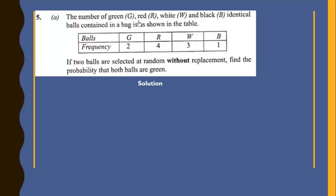The number of green, red, white and black identical balls contained in a bag is as shown in the table. So the green balls are 2, red balls are 4, white are 3 and then black balls is only 1.